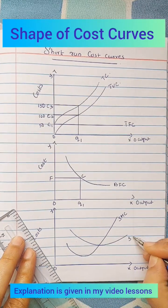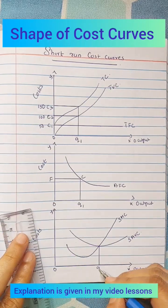Short run average variable cost curve. That is also U-shaped curve.